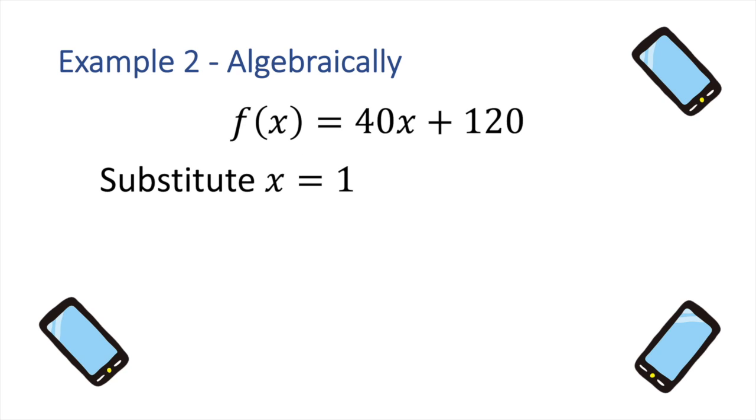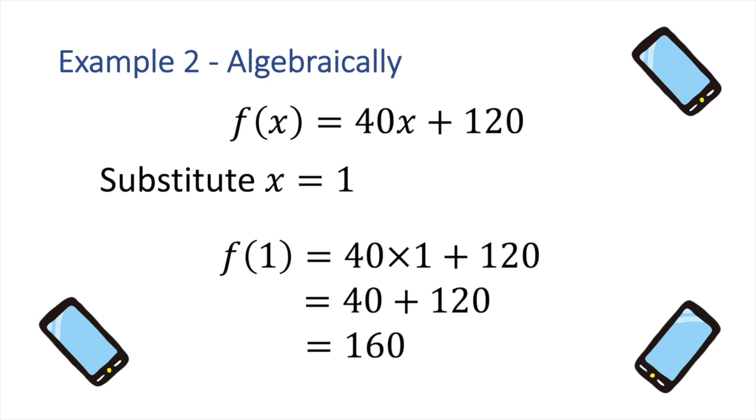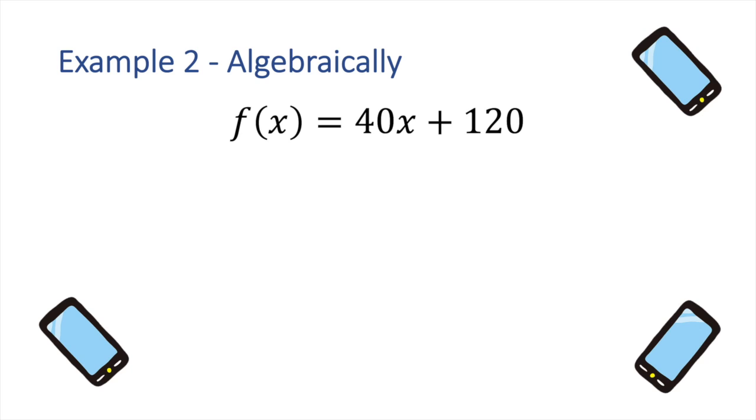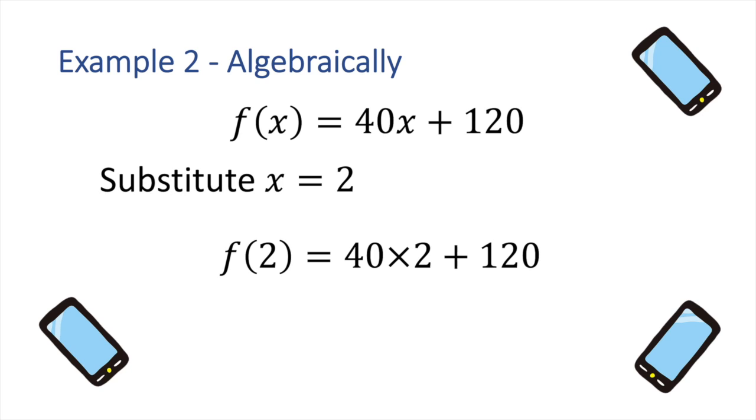First, substituting x = 1, we get 40 times 1 plus 120, or 160. So, this means that after one month, we've paid a total of $160, which agrees with our previous representations. Next, substituting x = 2, we get 40 times 2 plus 120, or 200. And, once again, the result that we've paid $200 after two months agrees with our previous representations of this same function.